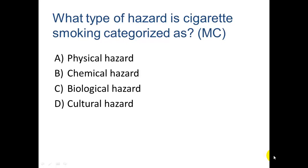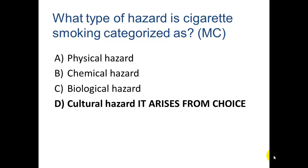Welcome back. We're going to take a look at the concepts of assignment 8.3. Let's start with: what type of hazard is cigarette smoking categorized as? Cigarette smoking is a cultural hazard — it arises from choice, and different cultures have different views towards the risk of smoking.